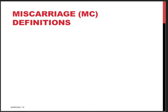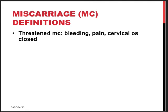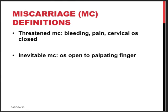When we discuss miscarriage we use different definitions, and it is paramount to understand what we mean by each. Threatened miscarriage is a description of the symptoms of bleeding and pain where the cervical os is still closed — so it is more a description than a diagnosis. Inevitable miscarriage means the cervical os is now open as a result of uterine contractions and is open to the palpating finger — a diagnosis made after physical examination.